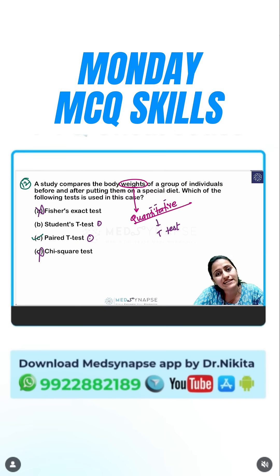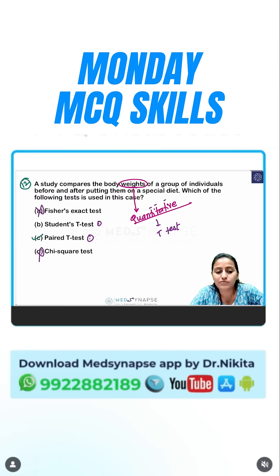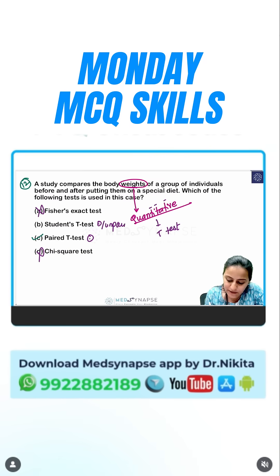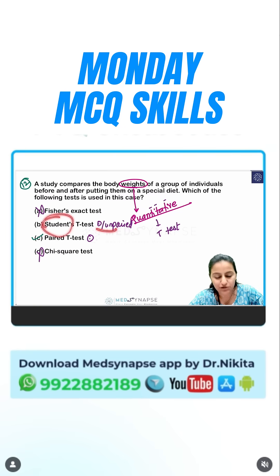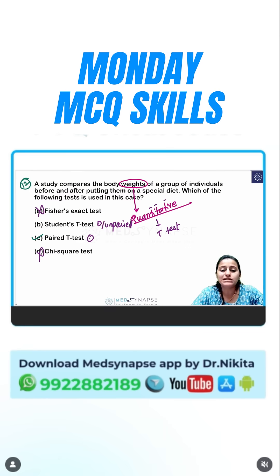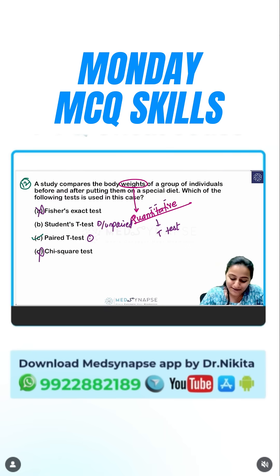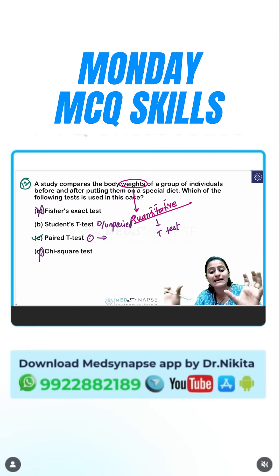For quantitative data it is a t-test. Now is it a paired t-test or a Student's t-test? Student's t-test is an unpaired t-test, since paired t-test is given in option C. You can remember this: till you are a student you are unpaired — you are not a couple. So Student's t-test is unpaired.